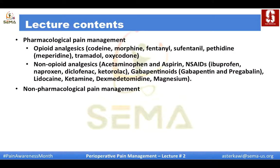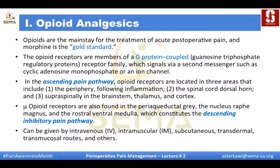I'm going to start with opioids. Opioids are the mainstay for the treatment of acute postoperative pain and morphine remains the gold standard. Opioid receptors are members of the G protein-coupled family which signal via second messengers such as cyclic adenosine monophosphate. What's important about opioid receptors is that you find them almost everywhere in the pain pathway — in the ascending pain pathway, the periphery, the spinal cord, supraspinally in the brainstem, thalamus, and even the cortex.